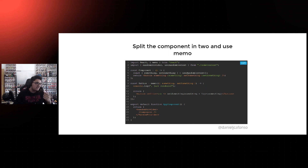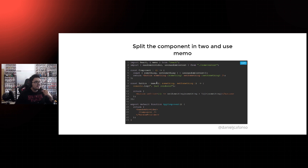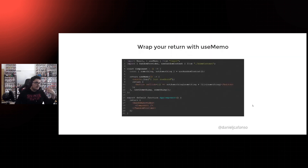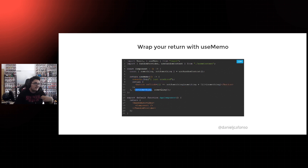Another thing you can do is put the component into a memo. By using the memo function on the button, you can tell the component it only needs to re-render whenever 'something' or 'setSomething' changes. So if we're still using the first version of the context with 'otherThing' in it, whenever we click the button and update 'something,' it will render for 'something' and re-render for 'otherThing,' but since the button is wrapped with memo and those didn't change, it won't re-render. Finally, a very similar approach is to wrap the return of the component with useMemo, setting the dependency array so it only recalculates whenever 'something' or 'setSomething' changes.